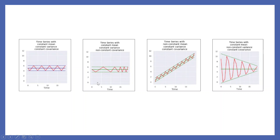The second one — green line — is an example of constant mean. The distance between the green dotted lines shows constant variance. But just see the distance of red lines — it is not constant. This is non-constant covariance.